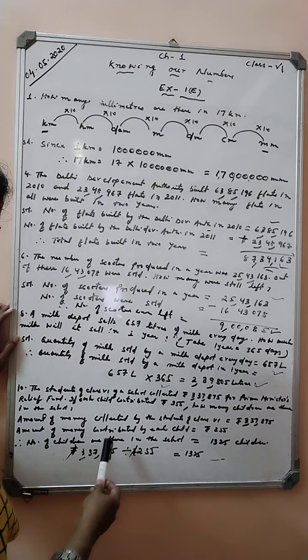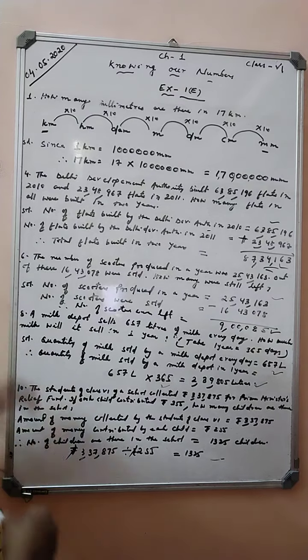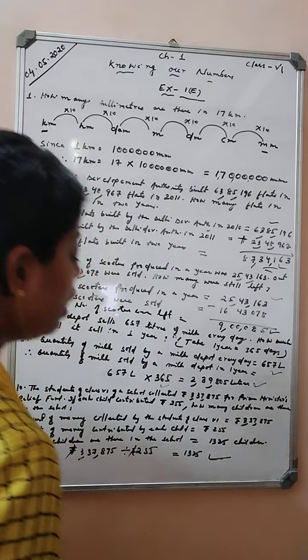3,37,875 divided by 255. The number of students in the school were 1,325.